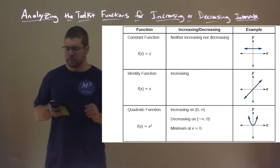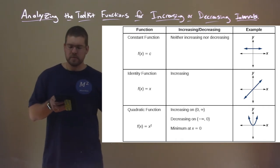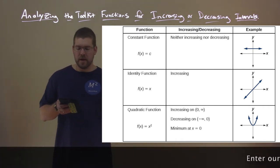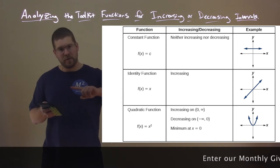A quadratic function, the base function f(x) = x squared, is increasing on the interval from zero to positive infinity. It is decreasing from negative infinity to zero.